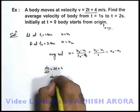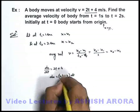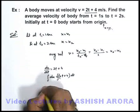So this gives us dx = (2t + 4)dt, and on integrating both sides.